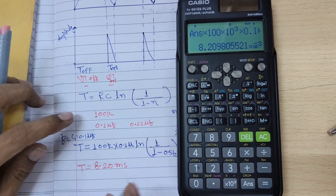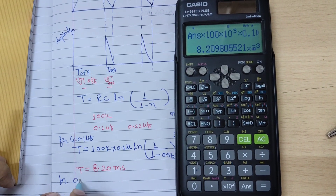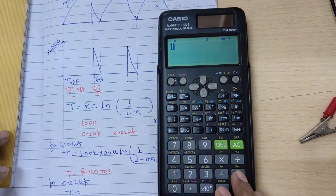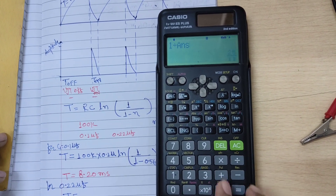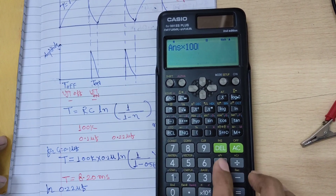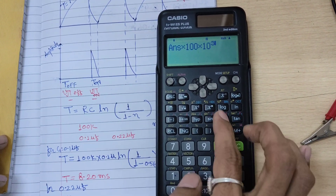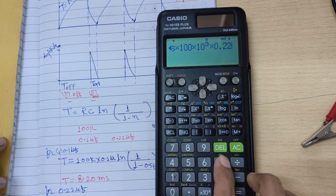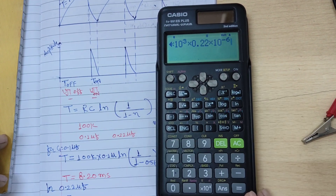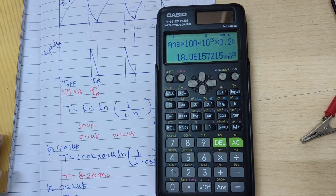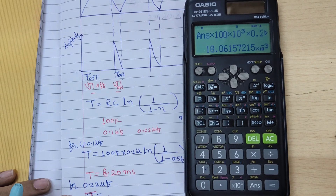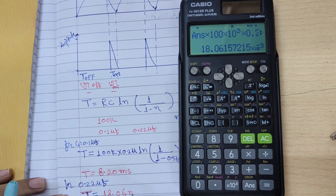Similarly, we can calculate for 0.22 micro farad. The total time is calculated the same way: 1 minus 0.56, then 1 divided by the answer, natural log of the answer, into 100 kilo ohms, and this time capacitance is 0.22 micro farad. The time for the 0.22 micro farad capacitor is 18.06 milliseconds. This is the total theoretical time.